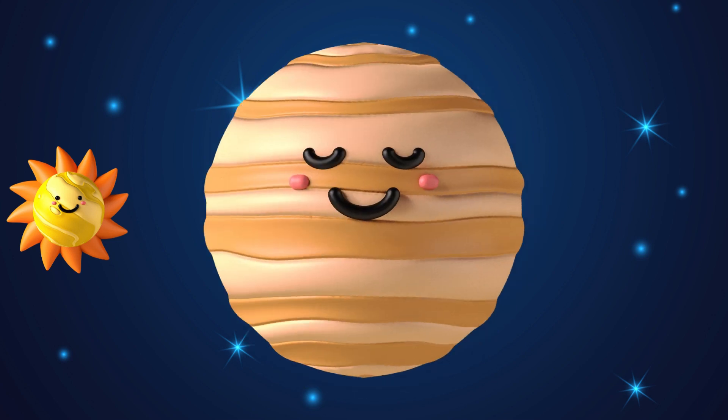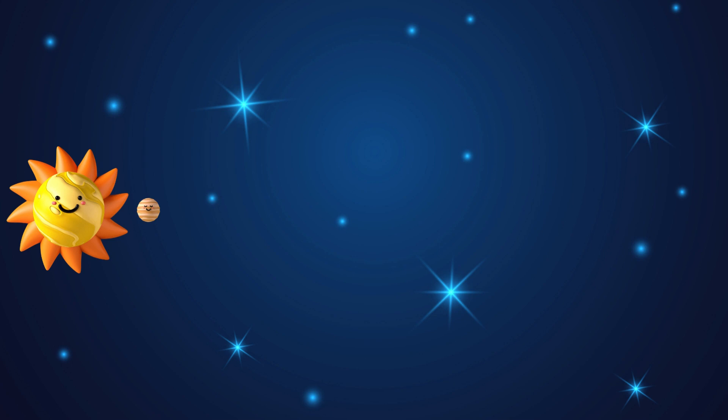The closest planet to the sun is Mercury. He's the smallest, the rocky surface with craters on it, a bit like the moon.